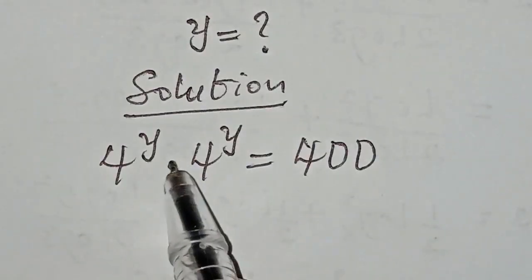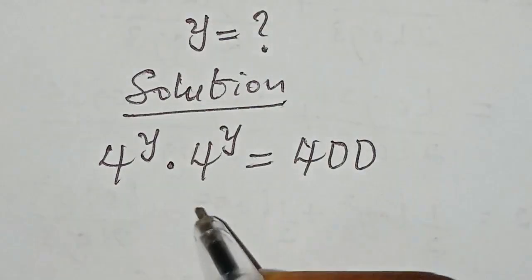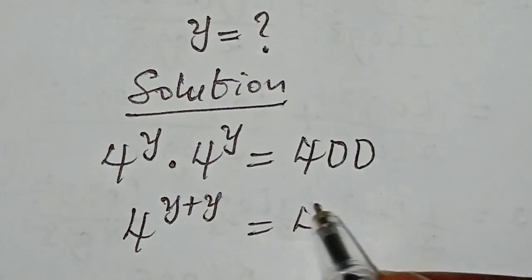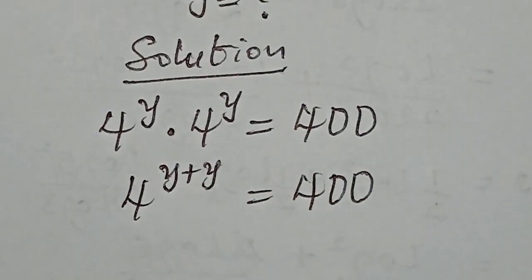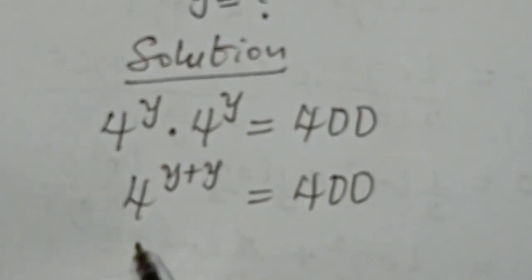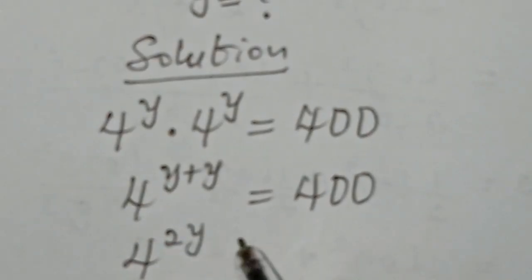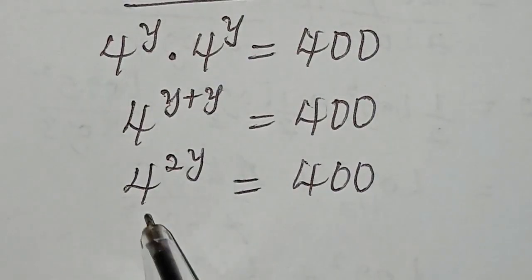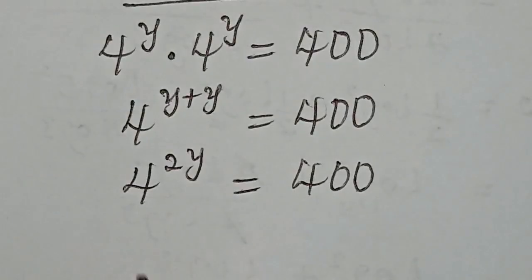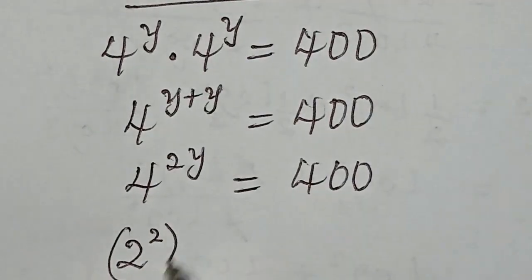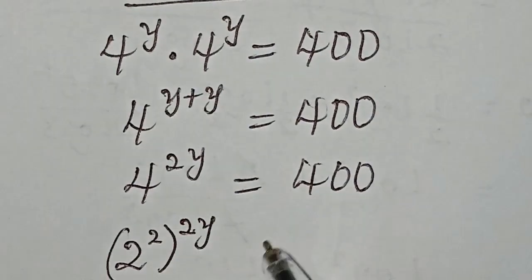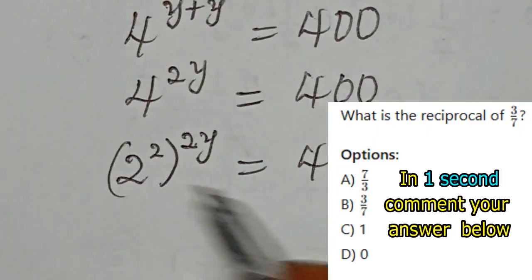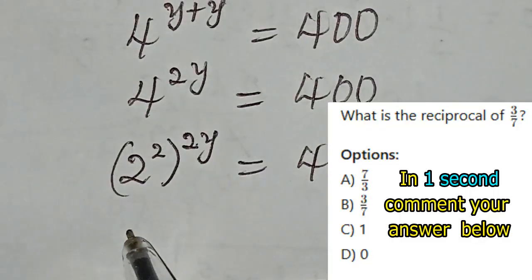We need to simplify the left-hand side by adding the exponents. So we reduce the base to 2 at the left-hand side, and we must apply the exponents at the left-hand side.